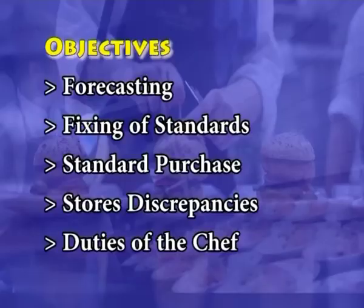Objectives. In this episode, the following aspects of production control are going to be discussed: forecasting, fixing of standards, standard purchase, stores discrepancies, and duties of the chef.